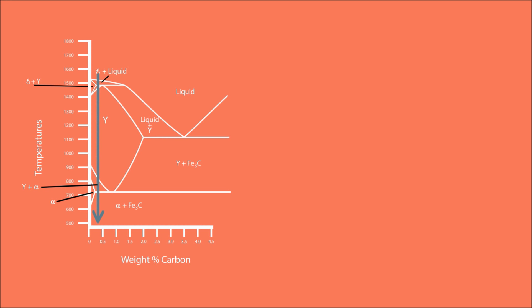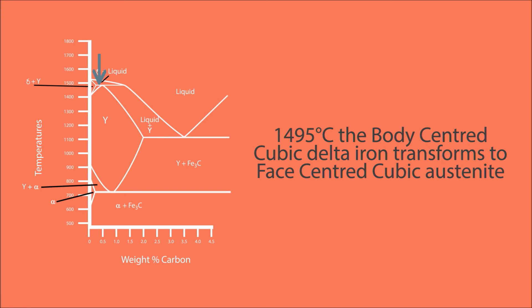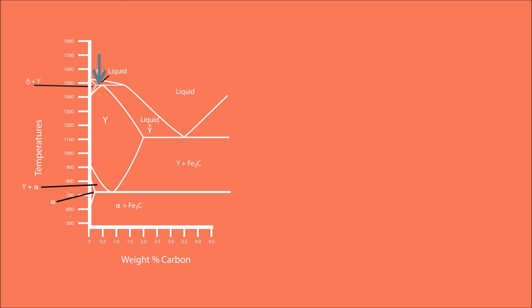Taking an example of a 0.3 percent carbon steel: the steel is molten until we cool to 1510°C, at which point the liquid iron starts to solidify into delta iron. From 1510 to 1495°C, the amount of delta iron increases while the amount of liquid decreases. At 1495°C, the body-centered cubic delta iron transforms to face-centered cubic austenite. As we continue to cool to 1454°C, the amount of austenite increases and liquid decreases until we have a fully solid austenitic structure.